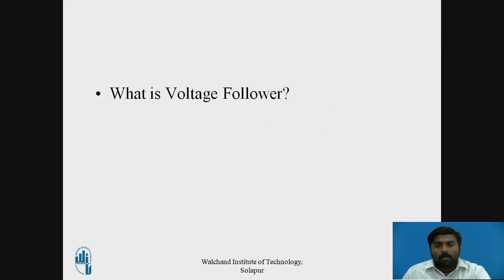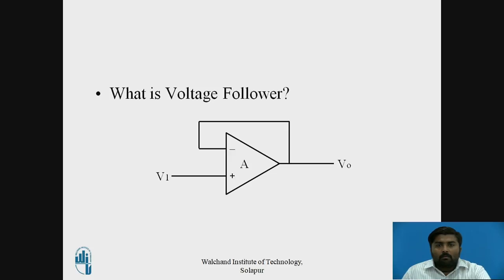Before starting with the actual session, let's recall what a Voltage Follower is. A Voltage Follower is nothing but the non-inverting amplifier — it has its input connected to the non-inverting terminal and the feedback path connected to the inverting terminal of the op-amp. That feedback path has a gain of 1, so whatever input you apply, the same voltage appears at the output. That is why it is called a Voltage Follower.